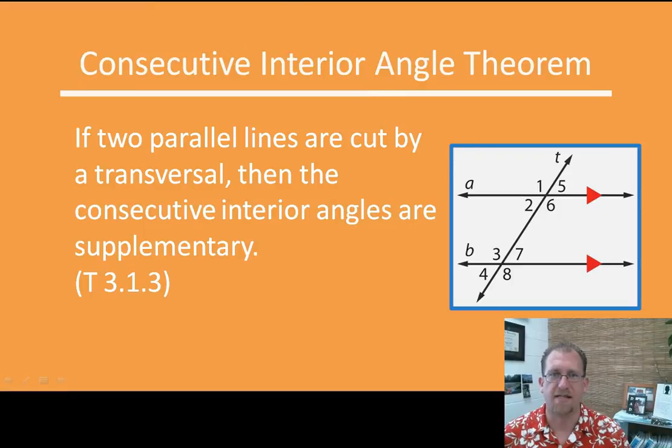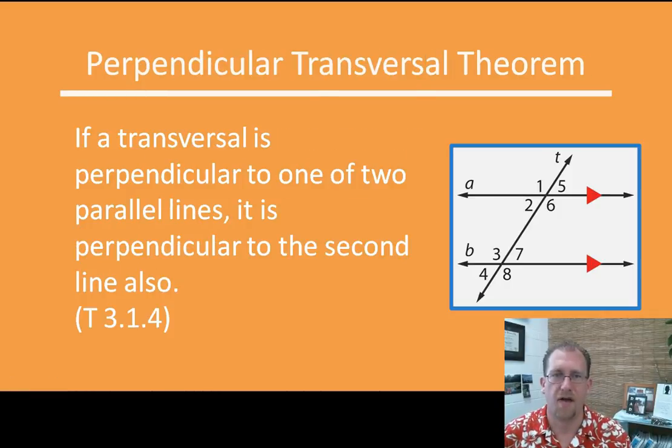The next idea is that consecutive interior angles are supplementary. And we already kind of demonstrated that with an example a moment ago. If four and two are congruent because they're corresponding angles, and if three and four are supplementary because they're a linear pair, then three and two must also be supplementary, right? And so the idea here is that any two angles that are consecutive interior angles are going to be supplementary. Here we have a slight modification to all of this. If you have two lines that are parallel and are cut by a transversal, and if the transversal is perpendicular to one of those parallel lines, then it must also be perpendicular to the other parallel line. And we can prove that together as well.